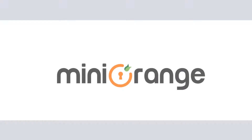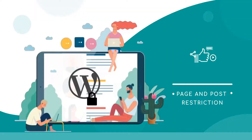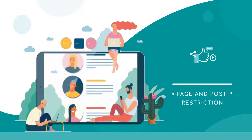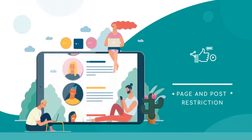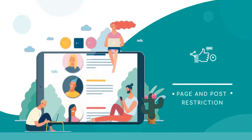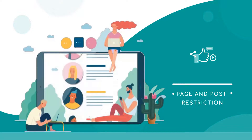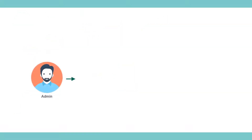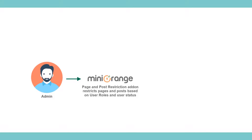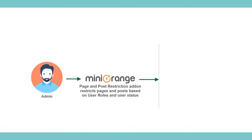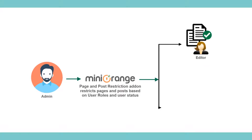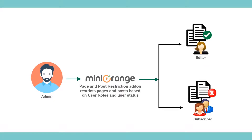Hello everyone! Welcome to Mini Orange. If you want to show your WordPress pages or posts to only certain users, then you are at the right place. Mini Orange page and post restriction add-on restricts WordPress pages and posts based on WordPress user roles and users' login status.